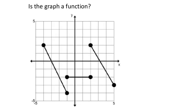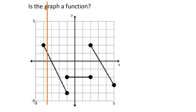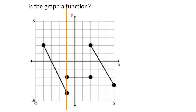This next graph looks funky — a bunch of straight line segments. All we do is take our vertical line and scan it. Scanning from left to right, it looks good at first — the graph passes through only once. But then I reach a point where the vertical line hits the graph at two locations simultaneously. So is this a function? No.